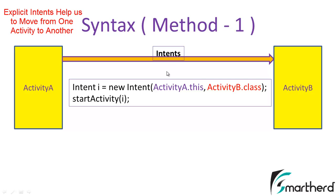The syntax is: Intent i = new Intent(...), then startActivity(i). Here Intent is the class and i is the object of this Intent class, and we initialize it with Intent i = new Intent. Within the brackets we have two parameters. The first parameter represents the context — that is, which activity we are moving from. Since we are migrating from activity A, we write ActivityA.this. The second parameter is the class we are moving to, so we write ActivityB.class.